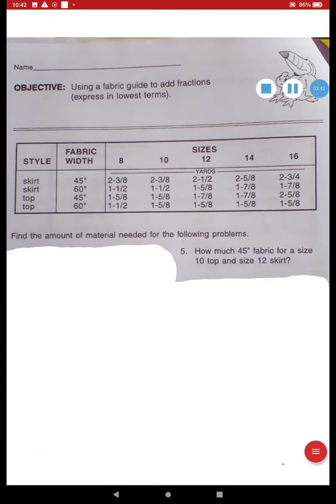All right, for this next example let's look at number five. How much 45 inch fabric for a size 10 top and size 12 skirt? I forgot to mention that before, these little symbols over here, the two little quote marks, that means inch. Okay, so now we're looking for 45 inch fabric. Got it. Size 10 top, so let's go to top. 45 inch, size 10, where does that intersect? One and five eighths. Let's write that down. One and five eighths. All right, and now a size 12 skirt. So 45 inch fabric for skirt, size 12, where does that intersect? Take your fingers together. Two and a half to write that down. Two and one half. All right, now I can add those together.